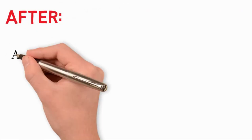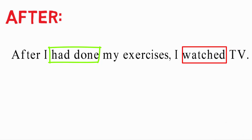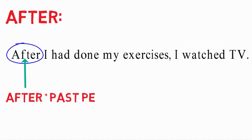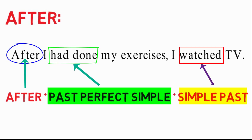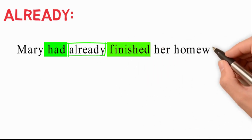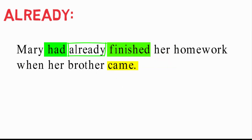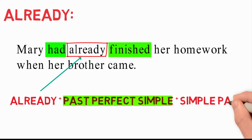After 'after': for example, 'After I had done my exercises, I watched TV.' The first verb that comes after 'after' is conjugated into the past perfect simple, and the second one is conjugated into the simple past. For 'already': 'Mary had already finished her homework when her brother came.' The first verb that comes after 'already' is conjugated into the past perfect simple, and the second verb is conjugated into the simple past.